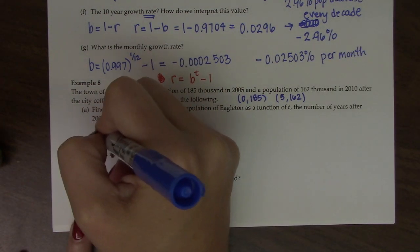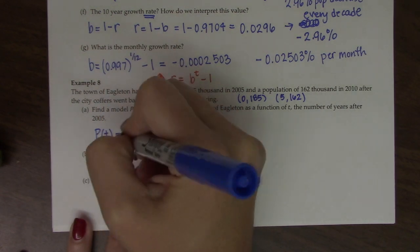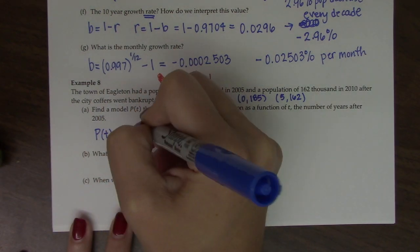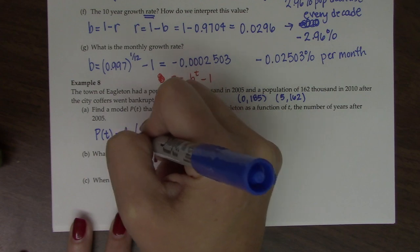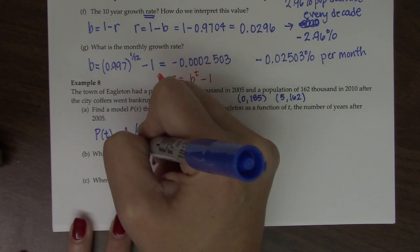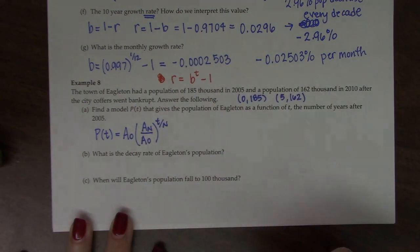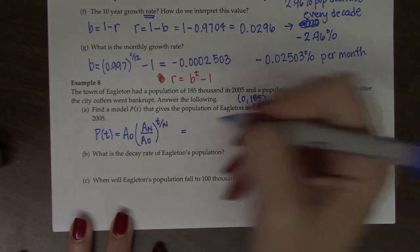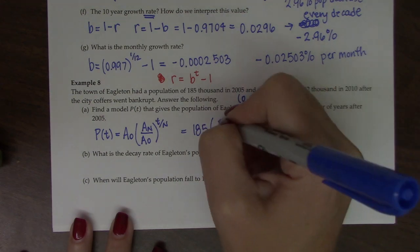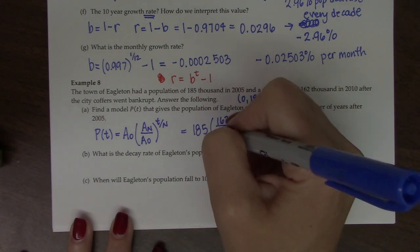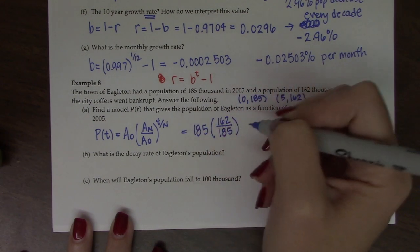So the model P(t) is still A naught times A at n years later over A naught raised to the t over n. So our initial value was 185. Five years later, it was 162. So put that over the initial.